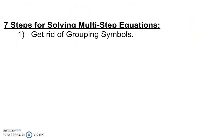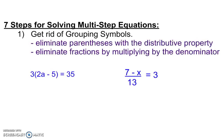We're looking at multi-step equations. Here are 7 steps for solving multi-step equations. First step, get rid of grouping symbols. That means eliminate parentheses using the distributive property and eliminate fractions by multiplying by the denominator.